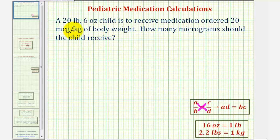To set up the proportion, we'll begin with a known rate of 20 micrograms per kilogram. So we can write this as 20 micrograms per one kilogram must be equal to